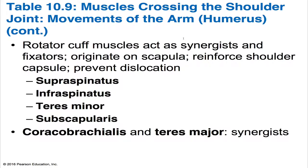Four muscles — the supraspinatus, infraspinatus, teres minor, and subscapularis — make up the rotator cuff. They originate on the scapula, and their tendons blend with the fibrous capsule of the shoulder joint. While the rotator cuff muscles act as synergists in angular and rotational movements, their main function is to reinforce the capsule and prevent dislocation of the humerus. The teres major and coracobrachialis cross the shoulder joint but don't contribute to its reinforcement.